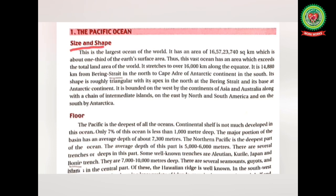The Pacific Ocean is the largest ocean in the world, with an area of 165,723,740 square kilometers — about one third of the total surface area of the earth. It stretches over 16,000 kilometers along the equator and 14,880 kilometers from Bering Strait in the north to Cape Adare in the Antarctic continent in the south. It is roughly triangular in shape, bounded by Asia and Australia in the west, North and South America on the east, and Antarctica in the south.